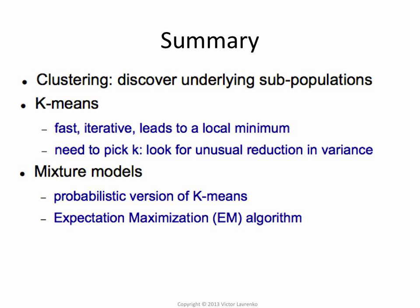We talked about mixture models — that's basically almost like k-means, only it's soft clustering. So an instance can belong to multiple clusters, and you have a degree of association between the cluster and the centroid. Another cool thing about mixture models is it kind of changes the definition of distance as it goes along, because each cluster is going to end up having its own variance or covariance matrix, which will change the notion of distance.